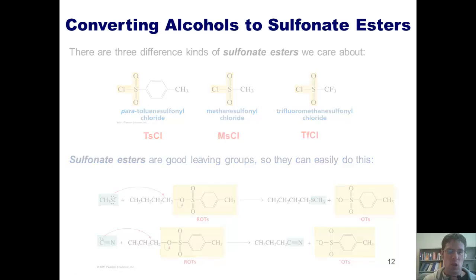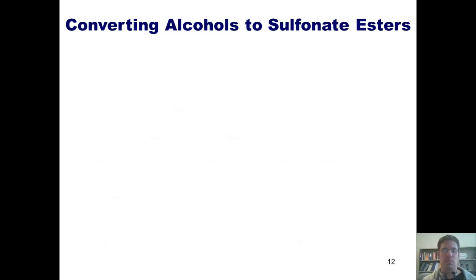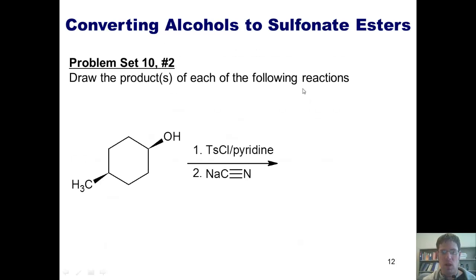That brings us to this example from my class problem set. Draw the products of each of the following reactions. Now, in this case, I've only shown one. I've got OH reacting with tosyl chloride and pyridine in step one, and then I'm treating it with cyanide nucleophile in step two.